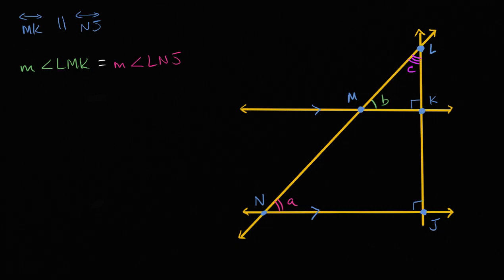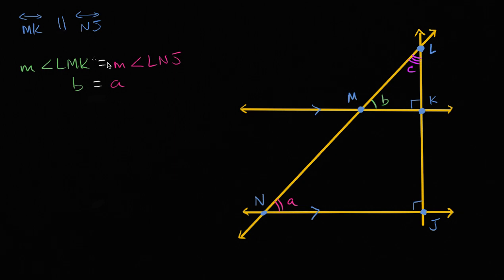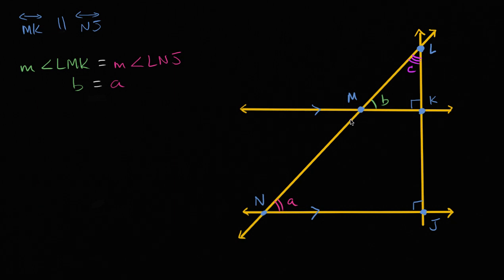Another way of writing this: the measure of lmk is b, and the measure of lnj is a. So we want to prove that b is equal to a, using all of this information that we know. I encourage you to try this on your own before I walk through it. Alright, so let's walk through it.